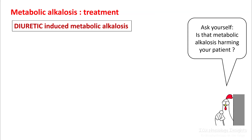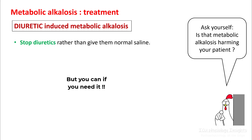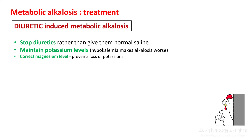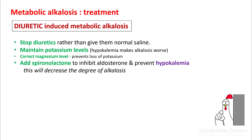Let's talk about diuretic-induced metabolic alkalosis, as it is the most common. The first question to ask yourself is whether that level of metabolic alkalosis is harmful for your patient. If it is, stopping the diuretic is better than giving normal saline. Maintain their potassium, as hypokalemia makes alkalosis worse. Correct magnesium levels, since diuretic use also results in magnesium loss. You can add spironolactone to your loop diuretics, which will inhibit aldosterone, prevent hypokalemia, and decrease the degree of alkalosis.